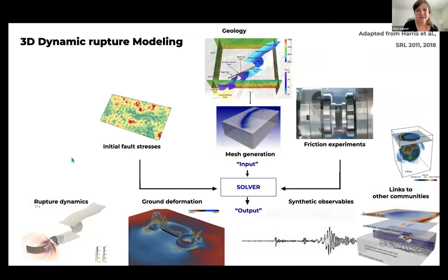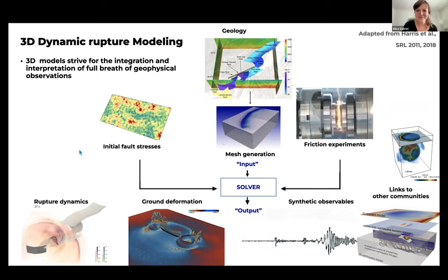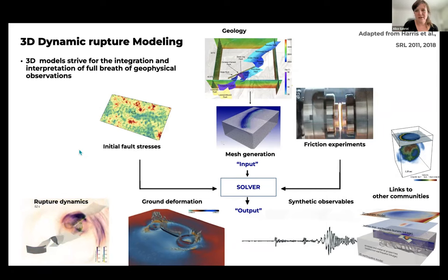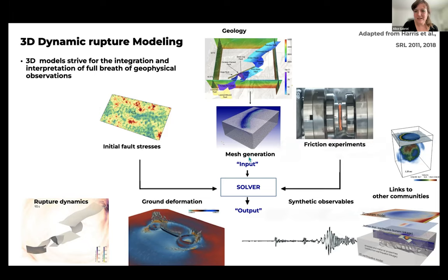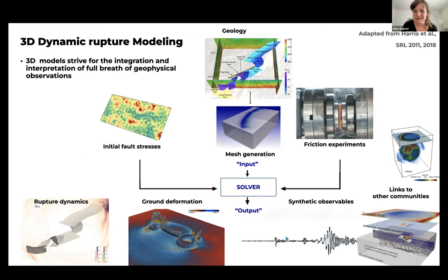Going to 3D dynamic rupture models, one advantage of the additional dimension is that we can strive to integrate and interpret the full breadth of geophysical observations and beyond. On the input side, models can be informed by things like initial fault stresses, fault roughness, tectonic loading, Coulomb stress changes, geology, high-resolution topography and bathymetry, 3D subsurface structure, and friction experiments. There is a huge scale difference between these different datasets. We put them together in a computational mesh split over many compute cores, generating output that can be verified with ground deformation, seismograms, hybrid GPS and synthetics.